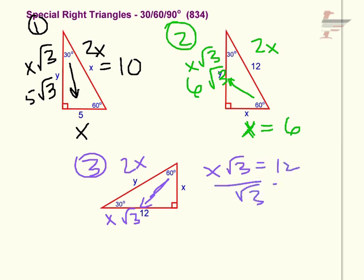If we divide both sides by root 3 we can get x is 12 over root 3. And remember you cannot leave your answer like that. We have a radical in the denominator so we are going to multiply the top and bottom by the square root of 3.